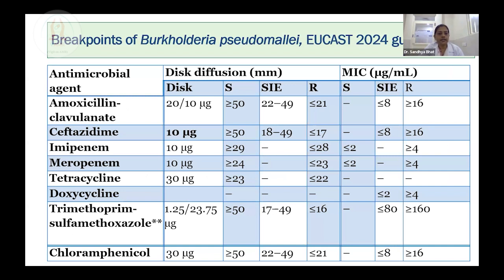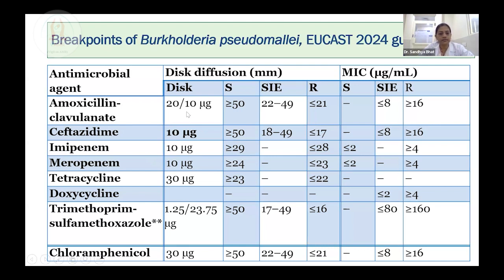The drugs in the testing panel are: amoxicillin-clavulanate, ceftazidime, imipenem, meropenem, tetracycline, co-trimoxazole, and chloramphenicol. These antimicrobial agents will be tested for Burkholderia pseudomallei by disk diffusion. Ceftazidime is routinely tested for gram-negative isolates using the 30 microgram disk with CLSI breakpoints. However, as we are following the EUCAST method, for ceftazidime the disk strength required is 10 microgram, as recommended by EUCAST. Centers must therefore procure the ceftazidime 10 microgram disk.